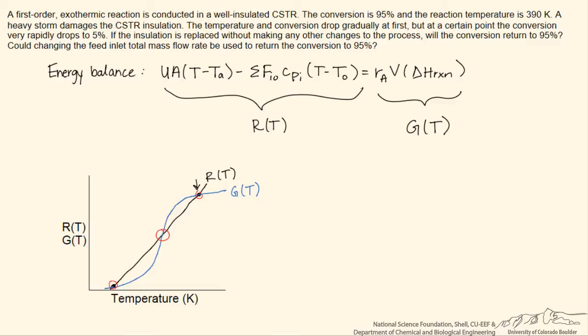Now we look at the case where the insulation falls off. And so what we expect is that that's going to greatly increase the overall heat transfer coefficient. The insulation basically makes that heat transfer coefficient vanishingly low if it's very well insulated and we have an adiabatic reactor. But now we expect that the heat transfer coefficient is going to go up.